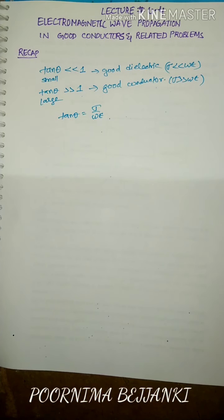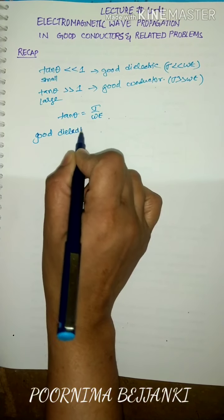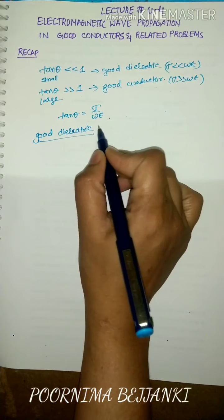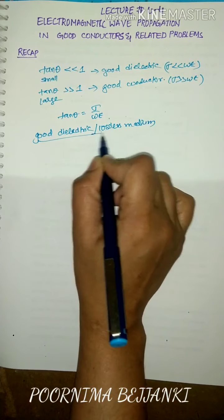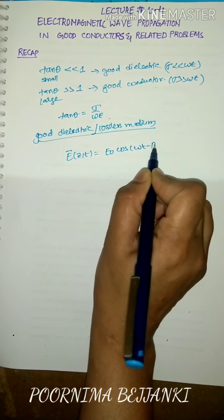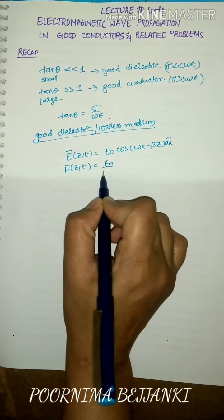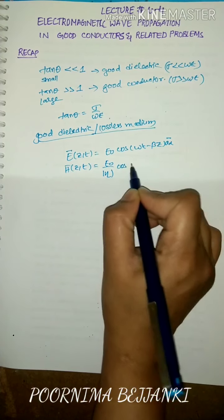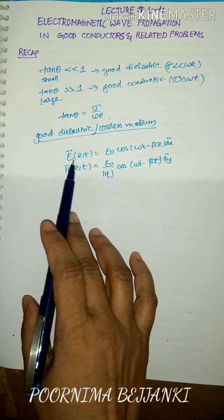Using these conditions, we derived expressions for electric field and magnetic field inside a good dielectric and free space. We also call a good dielectric medium a lossless medium. The expression for electric field for a good dielectric is E0 cos(omega t minus beta z) a_x-bar, and H-bar equals E0 divided by mod eta times cos(omega t minus beta z) a_y-bar.